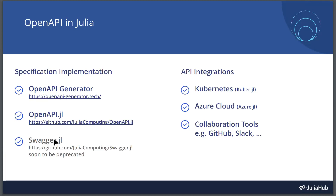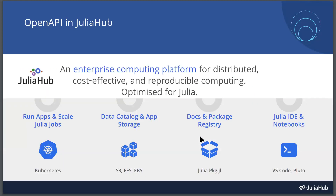There is also Swagger.jl, which is the older implementation for OpenAPI spec v2. Most Julia packages have already migrated to OpenAPI.jl, but a few still use the older package. Beyond these, there are many API integration packages generated by the OpenAPI Generator — they provide client libraries for web services such as Kubernetes, Azure, GitHub, Slack, and more. Many of these packages are in use in JuliaHub and quite a few have actually been developed and open-sourced by JuliaHub.